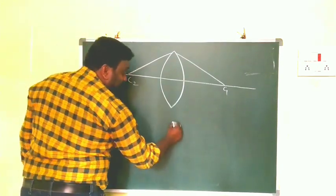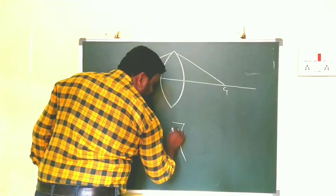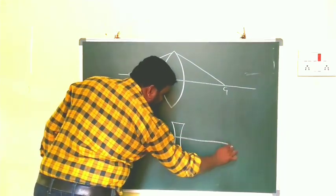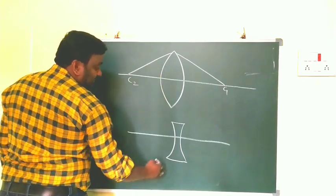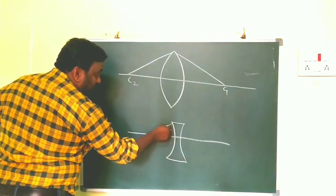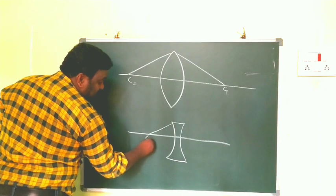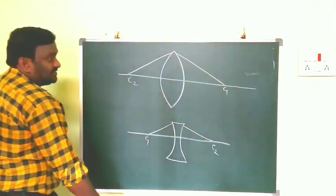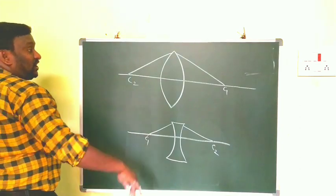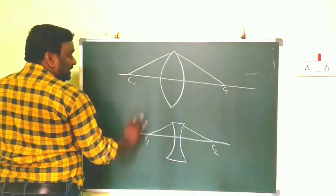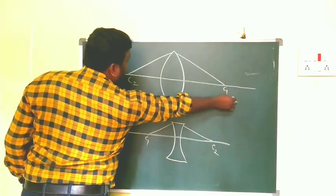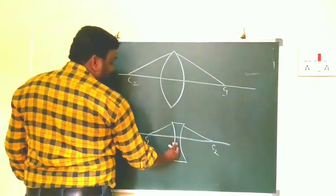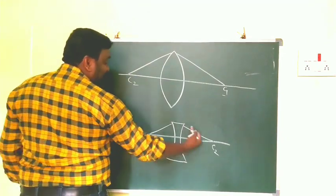Again, this is biconvex and this is biconcave. I am drawing the normals from the surface. This is C1 and this is C2. For a convex lens, C1 is on the right side and C2 is on the left side. For a biconcave lens, C1 is on the left side and C2 is on the right side.